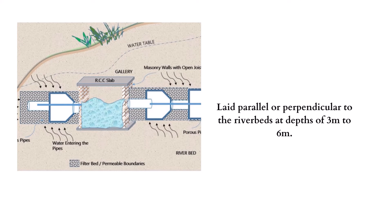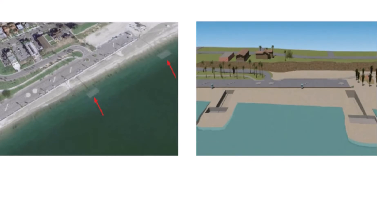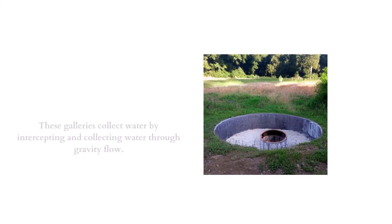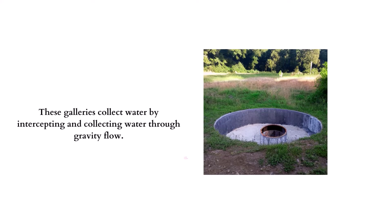Infiltration galleries are constructed near a permeable aquifer with a high water table and a continuous recharge of perennial flow. They are laid parallel or perpendicular to the river at a depth of 3 to 6 meters. The figure shown illustrates a gallery laid perpendicular to the flow of river water and constructed below the water table level. Another view shows a gallery constructed parallel to the river bed and below the water, not necessarily near the river bank. The variation of construction depends on the yield required.